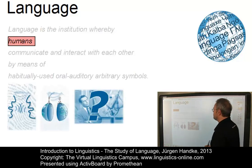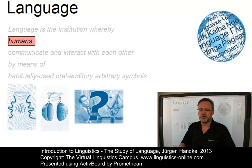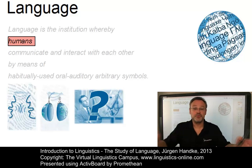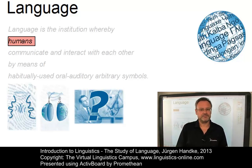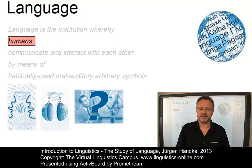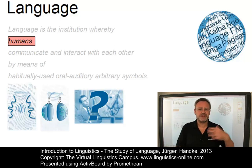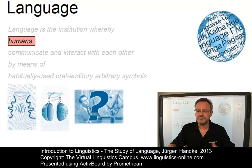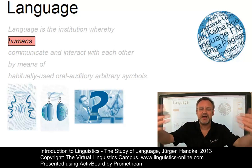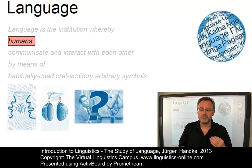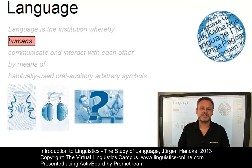Keyword number one: language is confined to humans. Animals certainly communicate with one another. However, all animal communication systems lack the ability to communicate about something beyond the here and now, and they do not allow novel messages to be produced or understood.